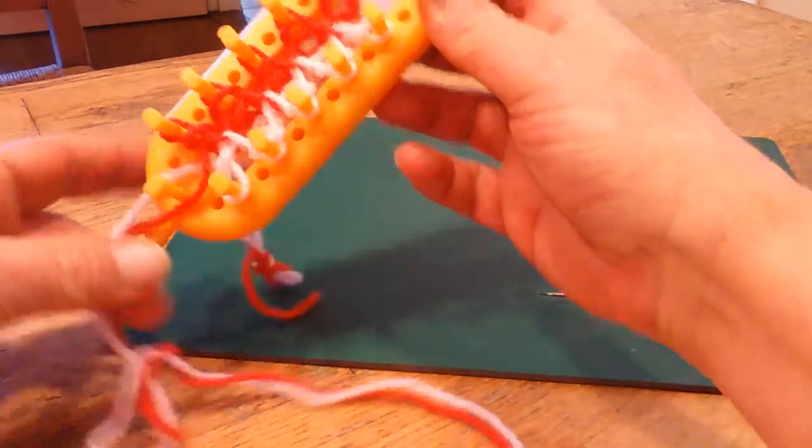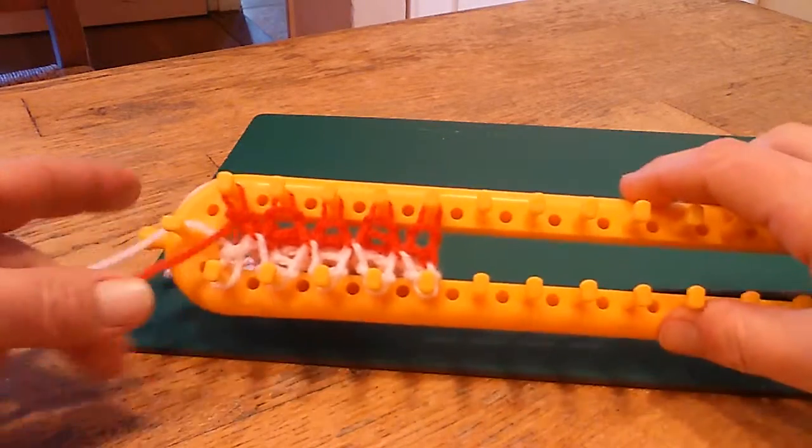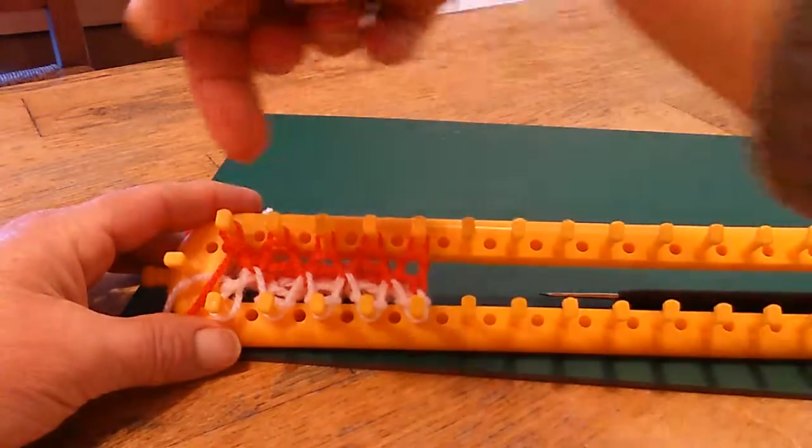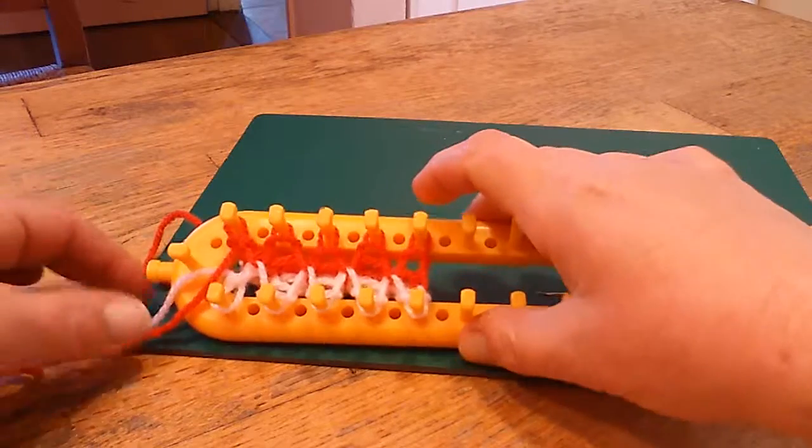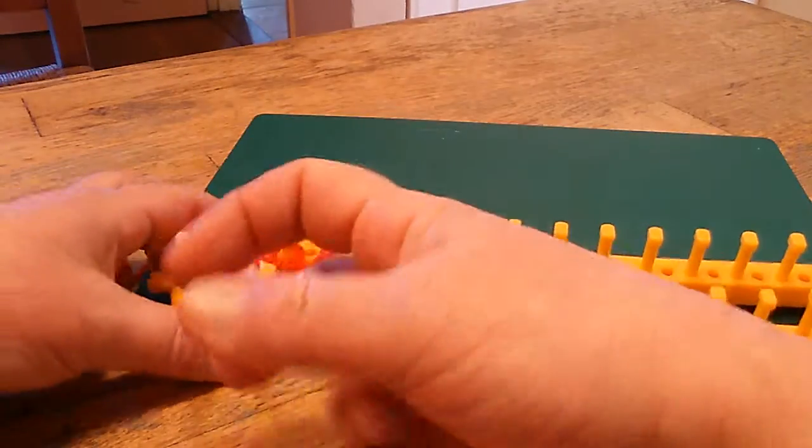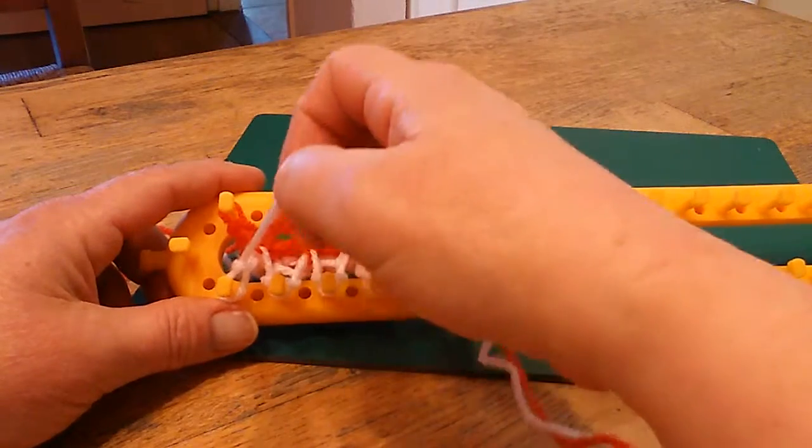I always turn my loom around so that I can work from left to right, because that's the way that's the most easiest for me. And then again I'll work the stitches.